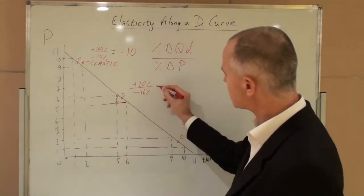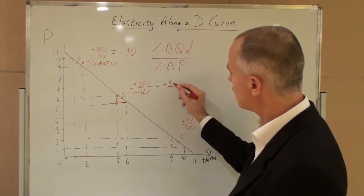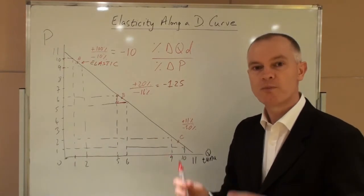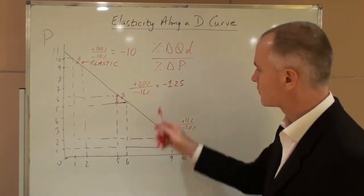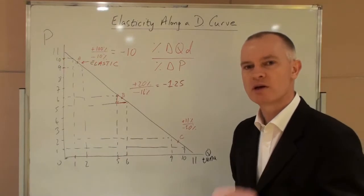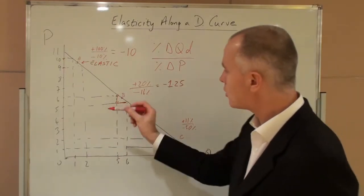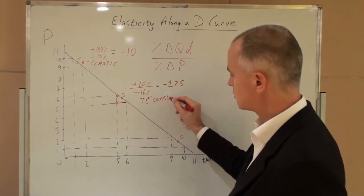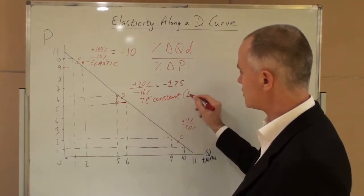Now, using the calculation, we get a value of minus one point two five. The change in demand is one point two five times bigger than the change in price. This, however, is misleading because total expenditure is constant at thirty pounds.